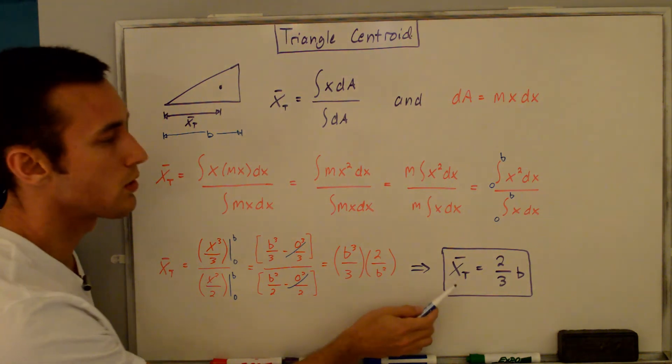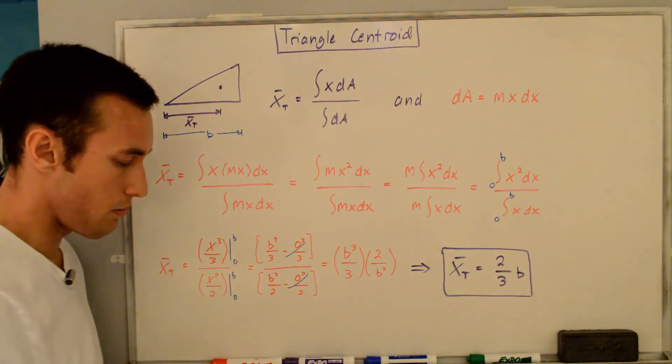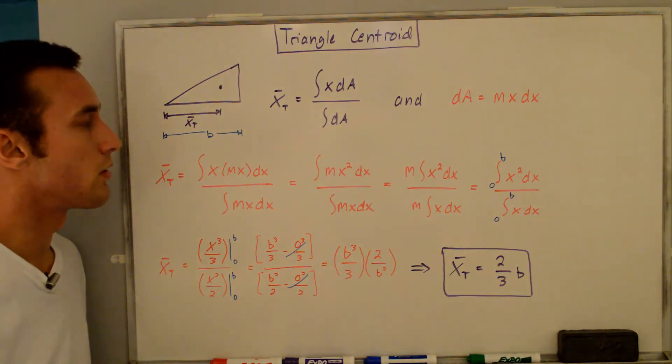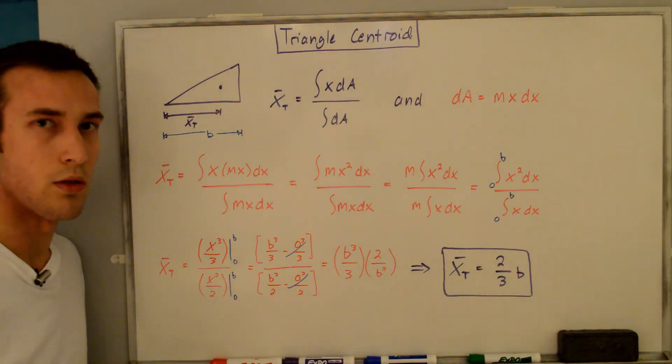The final expression for the x-coordinate of the centroid of a triangle equals two-thirds times the base. That is the general triangle centroid I'll be using in my other video. Thanks for watching.